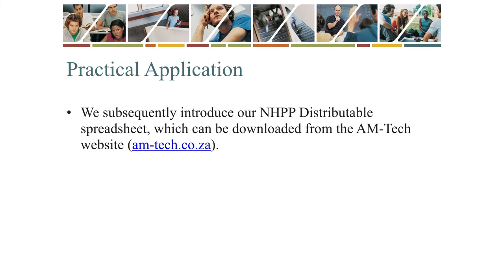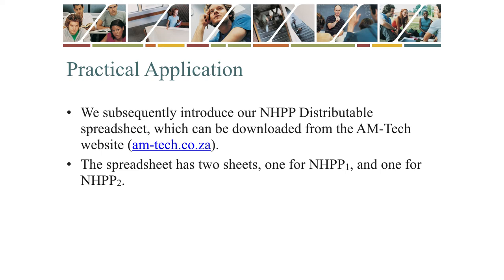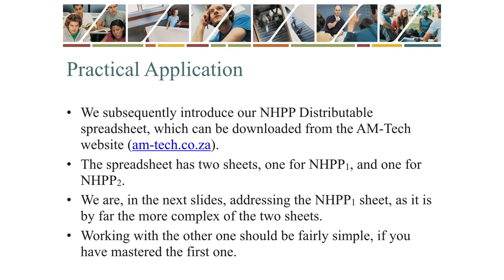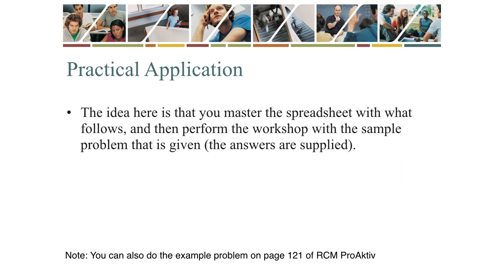We subsequently introduce our NHPP distributable spreadsheet, which can be downloaded from the Amtec website. The spreadsheet has two sheets: one for NHPP1 and one for NHPP2. We are addressing the NHPP1 sheet, as it is by far the more complex of the two. Working with the other should be fairly simple once you have mastered the first. The idea is that you master the spreadsheet with what follows and then perform the workshop with the sample problem that is given — answers are supplied. You can also do the example problem on page 121 of RCM Proactive, which is highly recommended.